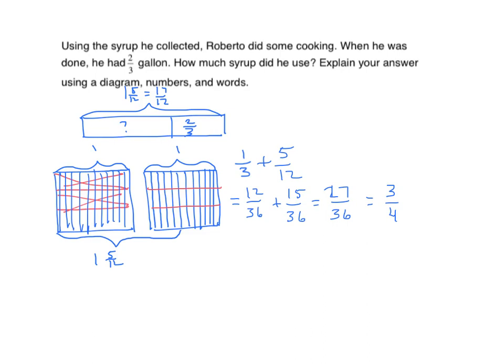If we prefer to do it the other way, I'm going to solve that as well. We have seventeen-twelfths and I'm subtracting two-thirds. Without using the diagram, our common unit would be thirty-six — we know that because we can multiply the two denominators. Seventeen-twelfths becomes fifty-one thirty-sixths, and two-thirds becomes twenty-four thirty-sixths. Fifty-one minus twenty-four gives us twenty-seven thirty-sixths, which works out to three-fourths.